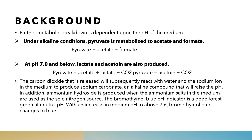After pyruvate is released, it may be changed into acetate plus formate, or into acetate or lactate, depending upon the pH of the medium. If the pH of the medium is alkaline, the pyruvate will be changed into acetate and formate. If the pH is neutral or below seven, the pyruvate will be changed into acetate, lactate, and carbon dioxide. Similarly, pyruvate can be changed into acetone plus carbon dioxide.